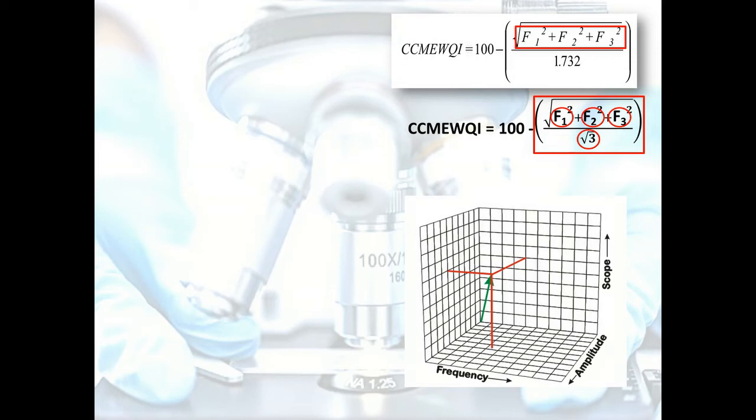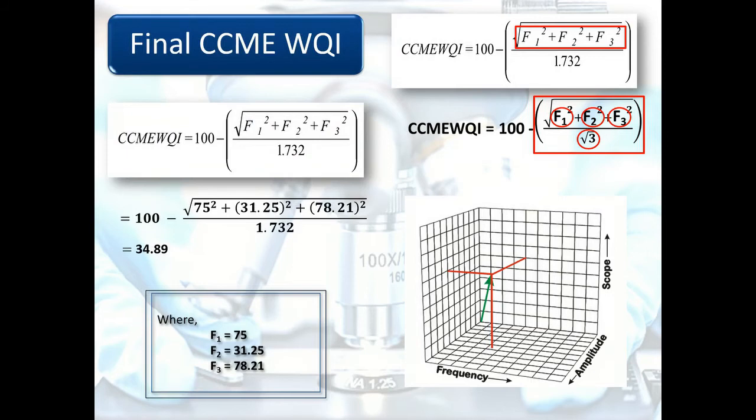From this example, after putting the value of scope as 75, frequency as 31.25, and amplitude as 78.21, we get the final CCME WQI value as 34.89.